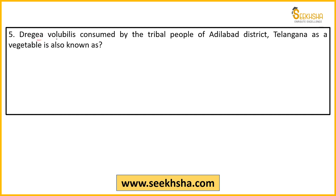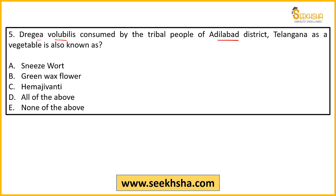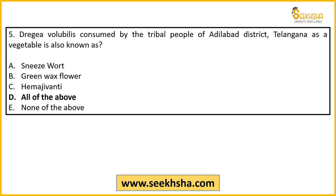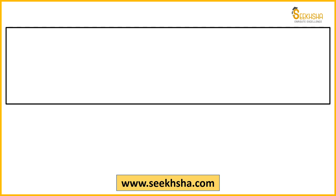Fifth question is on Dregea volubilis. This plant is found in Adilabad district of Telangana, where tribal people consume it as a vegetable. Its common names include sneeze wort, green wax flower, and Hemajiwanti — so the answer is all of the above.